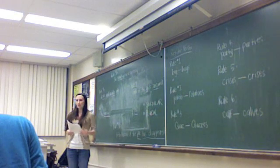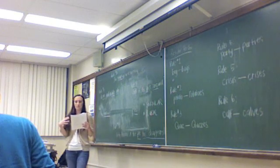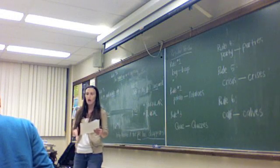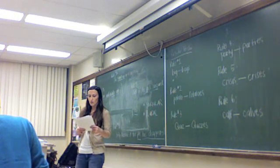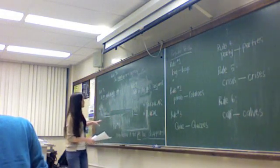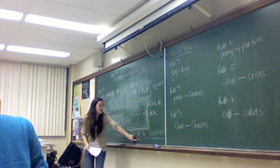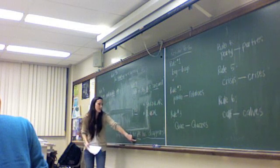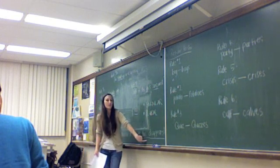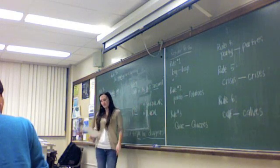So rule number nine on your sheet. Words that indicate or talk about portions like percent or majority or some, all or none. You look at the noun used after it. So we have 50% is our portion word. Right? And then our noun here is pi. What is pi? Singular or plural? Singular. So we have a, what kind of verb do we have? Singular. Right.